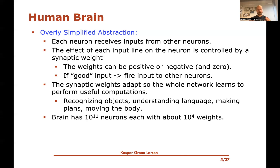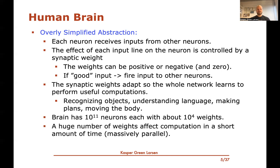The human brain has about 10 to the 11 neurons, and each of them has about 10 to the 4 weights — so about 10,000 connections to nearby neurons. So it's a huge, huge network. All these weights sitting in the brain are really all changing the computation that's being performed when you receive input stimuli from the surroundings. This is a massively parallel computation happening inside your brain.